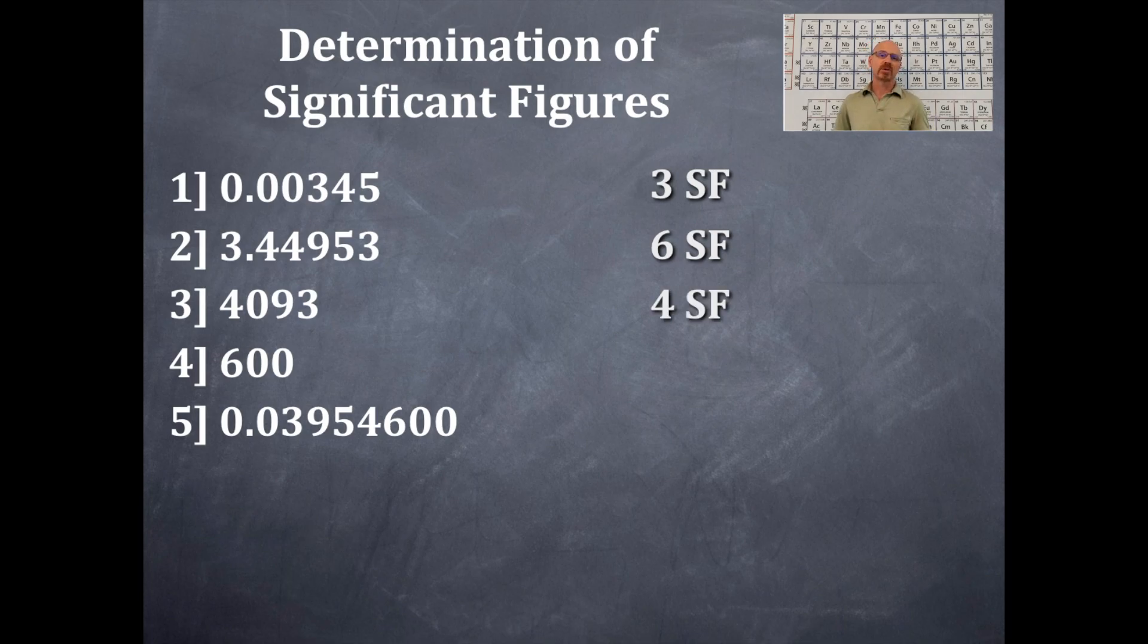The next example here, number four. The number is 600, no decimal. The 6 counts because there is a non-zero integer. And the two zeros after the 6, to the right of the 6, are trailing zeros. Trailing zeros only count if there is a decimal in the number. There is no decimal in the number there. Therefore, those two zeros that are trailing the 6 do not count. So there's only one significant figure.